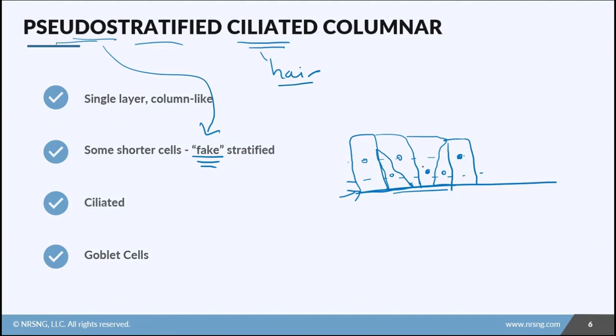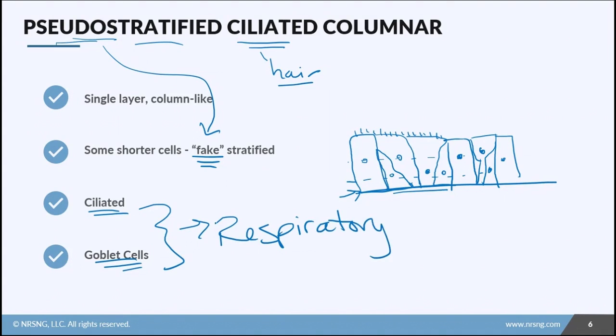It is actually one layer, it just looks like it could be multiple layers. And remember that it has cilia, those little hair-like projections. It could also have goblet cells, just another way where we see sometimes the cells have different levels of those nuclei. Where would we find cells that are ciliated and secrete mucus? In the respiratory tract, so we can get all that gunk out of our lungs.